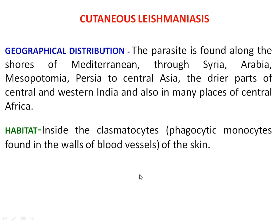As far as the habit of this parasite is concerned, it is present inside the clasmosides of the skin. Clasmosides are referred to as phagocytic monocytes — basically they are white blood cells. This parasite is present in the clasmosides, which are phagocytic monocytes found in the wall of the blood vessels of the skin.